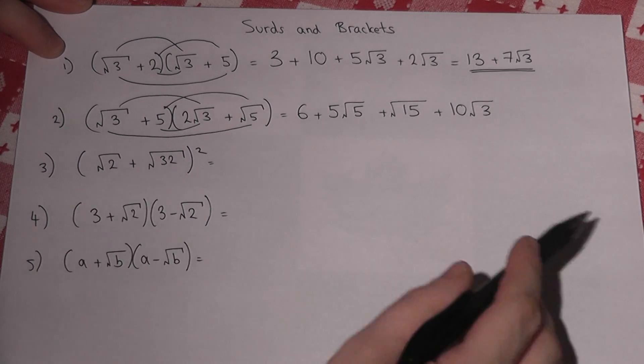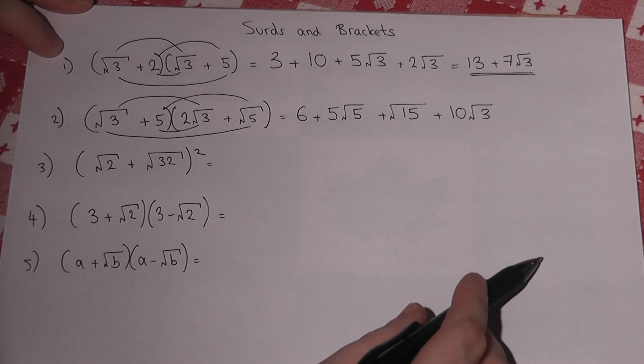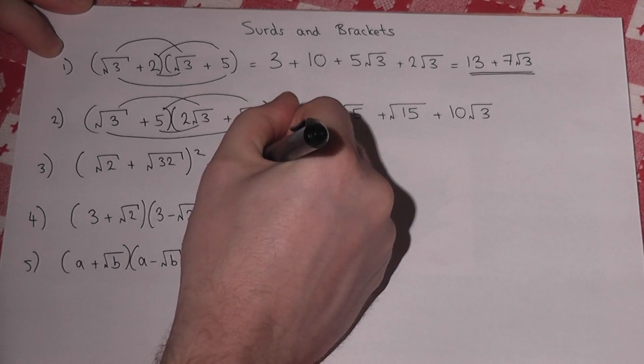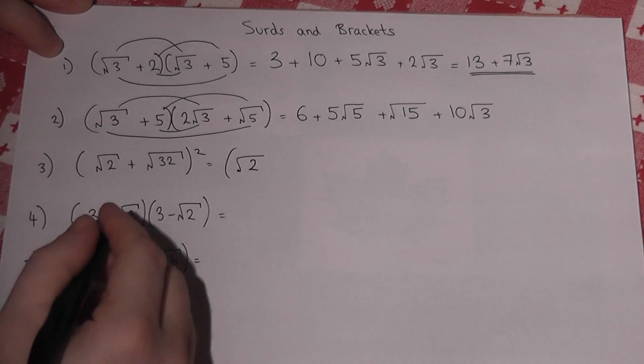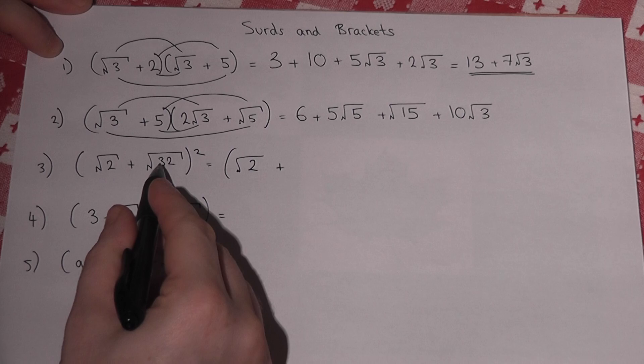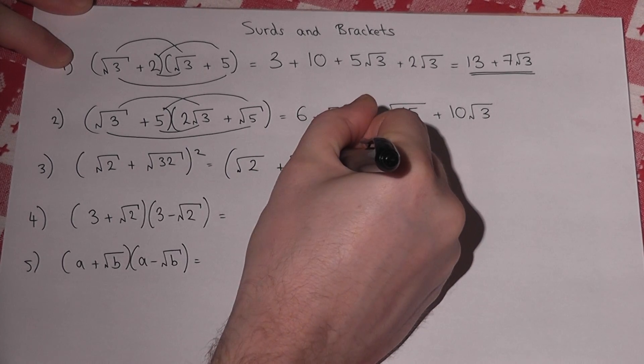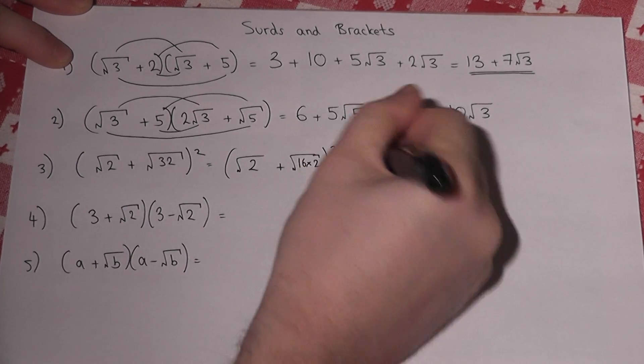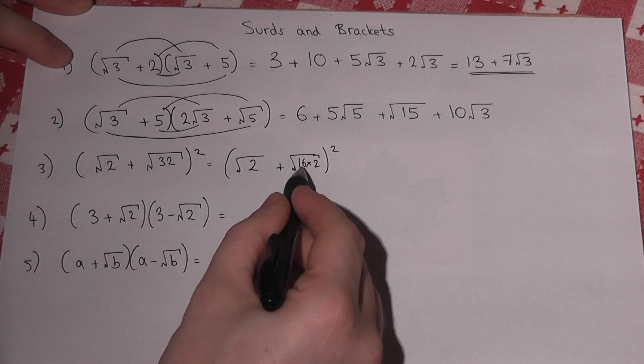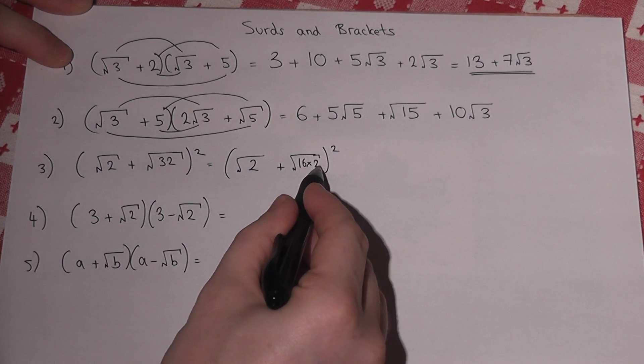Now in the third example, we can do a trick first of all. Now where possible, we always try to make our surds simpler. Now root of 32 is the same as root of 16 times 2. That is a square factor of 32, so this can be turned into root of 16 is 4, so 4 root 2.